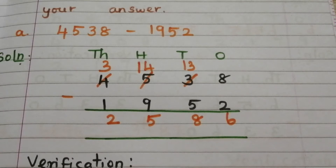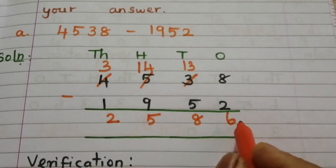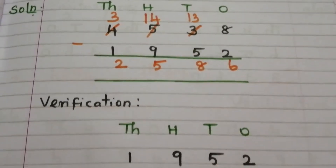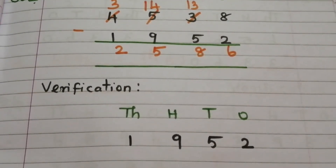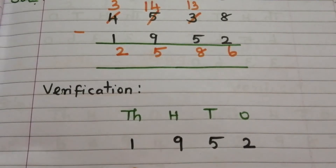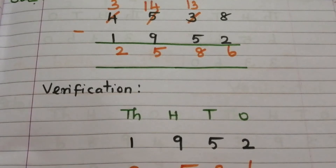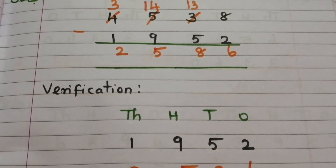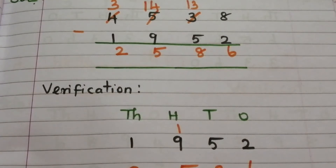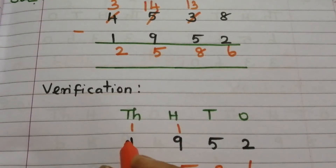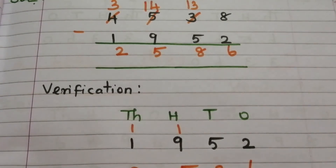To do this, we have to add our answer — the difference — to the subtrahend 1952. Adding 2586: 6 plus 2 is 8, 8 plus 5 is 13 — write 3 and carry 1. 9 plus 1 is 10, 10 plus 5 is 15 — write 5 and carry 1. 2 plus 1 is 3, 3 plus 1 is 4.